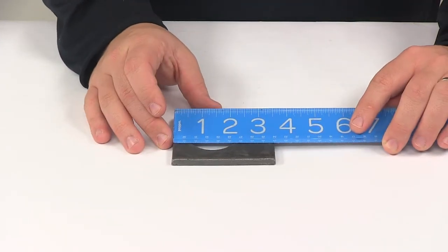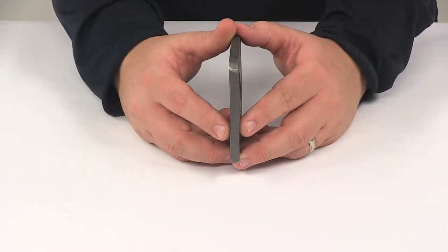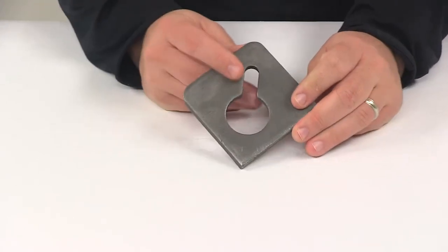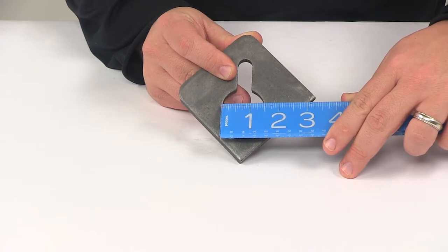Going this direction, edge to edge, it's going to measure right on 3 1/2 inches. The thickness is about 5/16ths of an inch thick. The hole right here is going to give us a diameter measurement of an inch and a half.